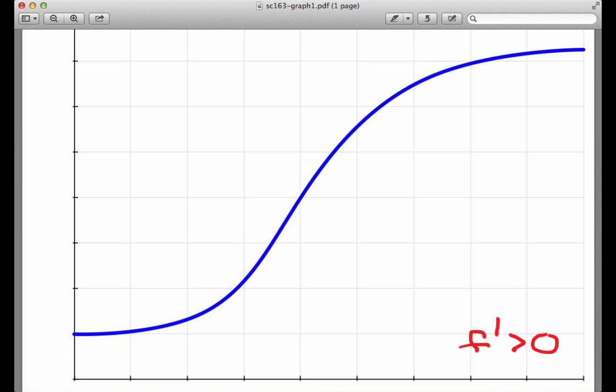So let's first of all decide where this function is concave up, and then we'll talk about concave down. A function is concave up, remember, if its first derivative is increasing. The function f here is increasing everywhere, but where is its first derivative increasing?